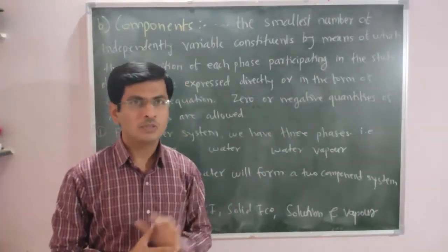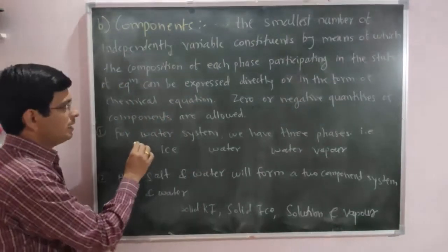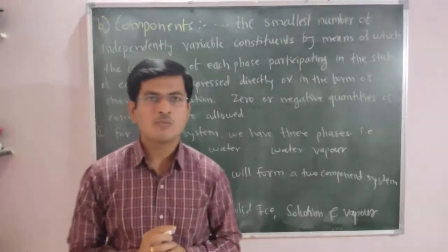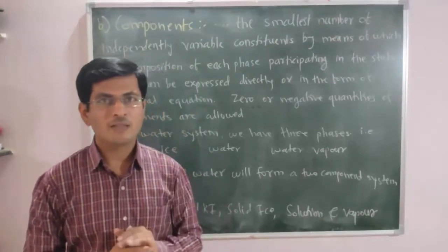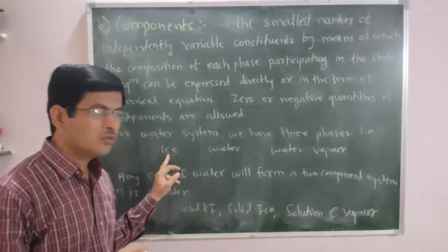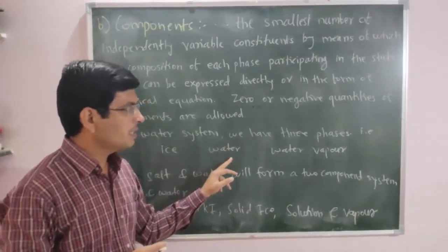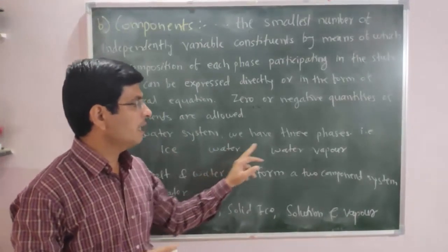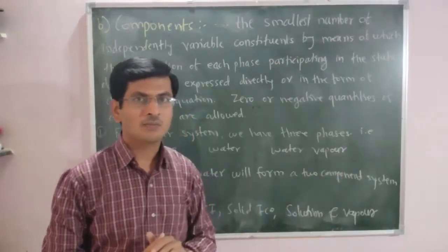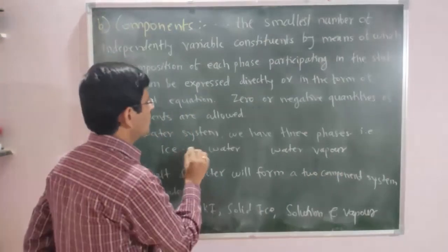For example, first we consider the water system. The water system has three phases: ice is the solid phase, water is the liquid phase, and water vapor is the gaseous phase. All three phases are in equilibrium.